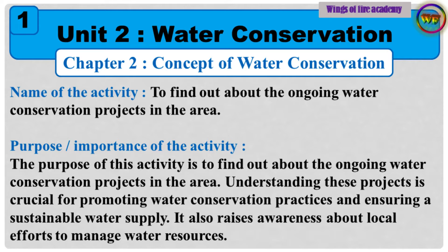Name of the activity: To find out about the ongoing water conservation projects in the area. Purpose and importance of the activity: The purpose of this activity is to find out about the ongoing water conservation projects in the area. Understanding these projects is crucial for promoting water conservation practices and ensuring a sustainable water supply. It also raises awareness about local efforts to manage water resources.